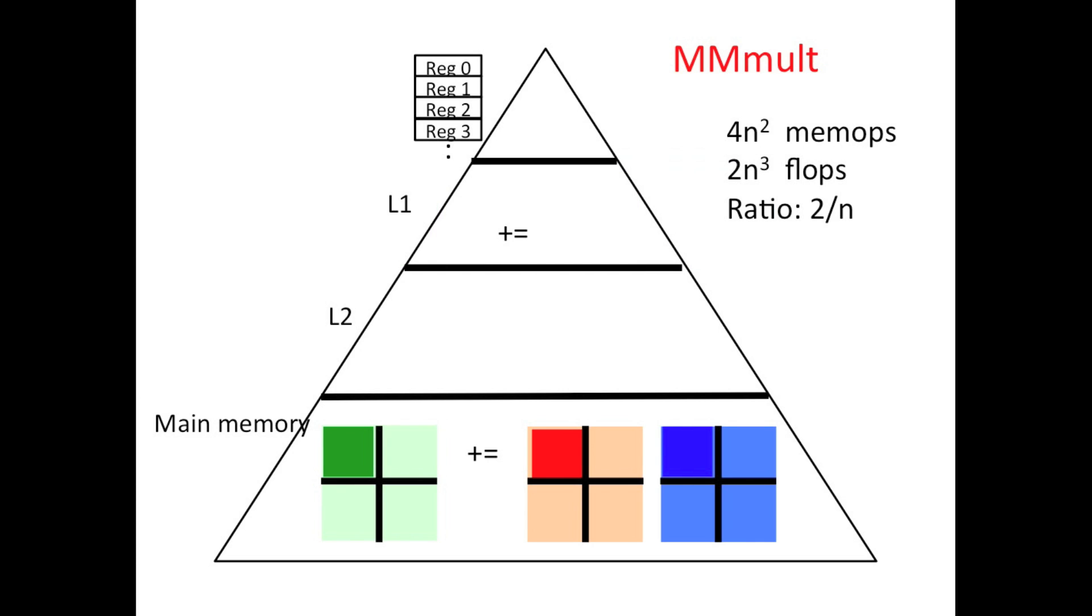Well, notice that we have learned how to do a partitioned matrix-matrix multiplication. And therefore, what we can do is partition the matrices, move blocks into the L1 cache that fit in the L1 cache, perform matrix-matrix multiplication, perform a matrix-matrix multiplication with the next blocks of A and B, and finally write the block of C back out. So, if each block is B by B, then you end up doing 4B squared memory operations for every 2B cubed floating-point operations, and if B is large enough, then that ratio is quite favorable.